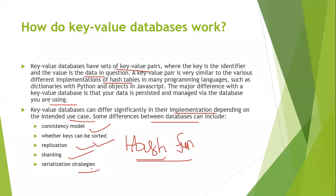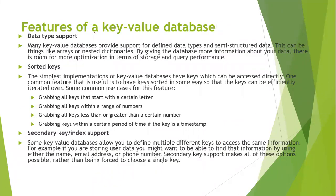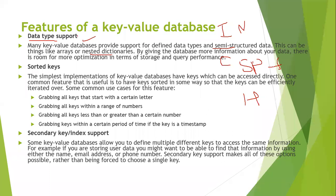Now let's look at the features of key-value databases. The first feature is data type support — it can store numerical data, character data, alphanumeric and special character data, floating point data, and hexadecimal data. Semi-structured data, arrays, and nested dictionaries can also be stored. In summary, any type of data can be stored in the key-value database.